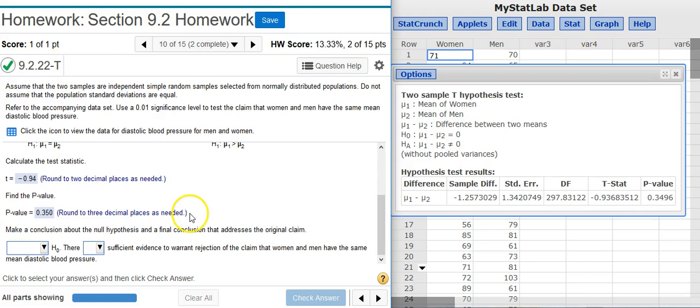And now, the last part of this problem asks me to make a conclusion about the null hypothesis and a final conclusion that addresses the original claim. Well, to do this, we're just going to take our p-value and compare it with our significance level. We have a 1% significance level. Here we have a p-value of 35%, which is well above the significance level. Therefore, we're outside the region of rejection. And therefore, we're going to fail to reject H-naught. Whenever we fail to reject H-naught, there is not sufficient evidence, or there is insufficient evidence. And I check my answer.